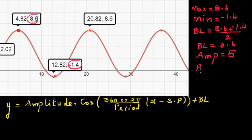Now to decide the period, you need to look at the x-coordinates. For finding maximum or minimum, you look at the y-coordinate, and to find the period, you look at the x-coordinate. The maximum is at x = 4.82 and the minimum is at x = 12.82. The distance from maximum to minimum is half a cycle, so half a cycle is 8. Therefore one full cycle, or one period, is 16.